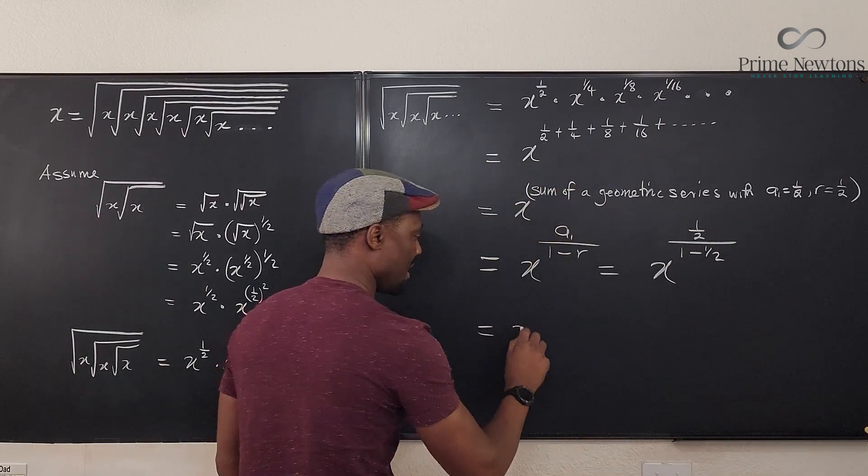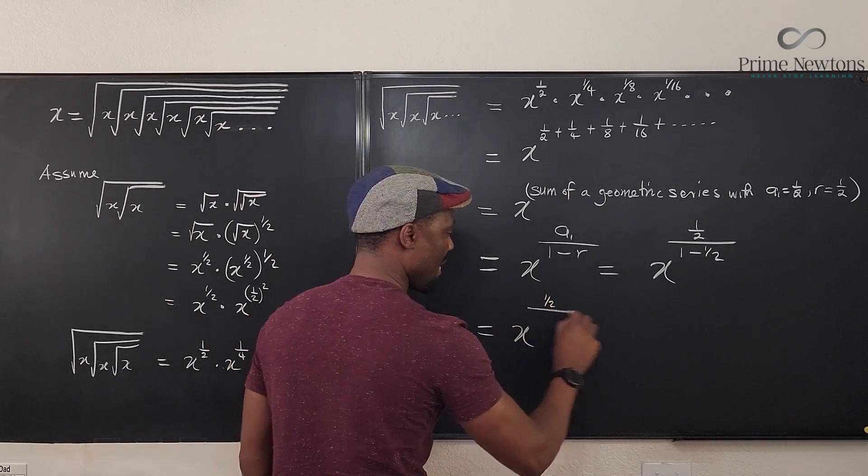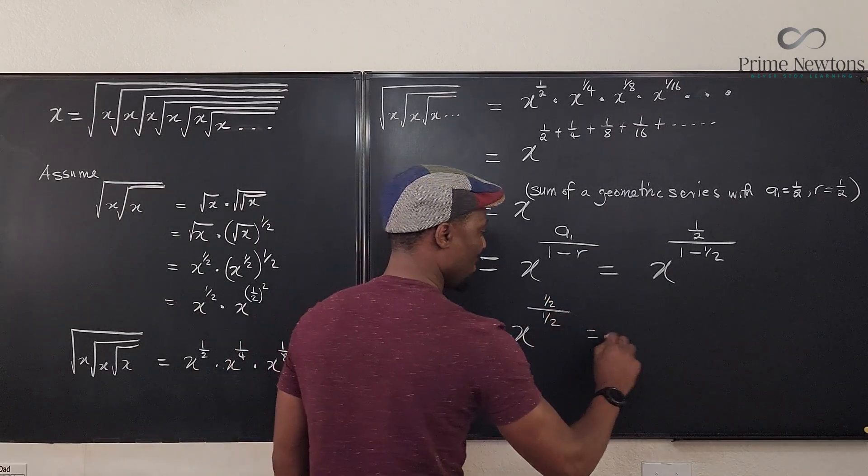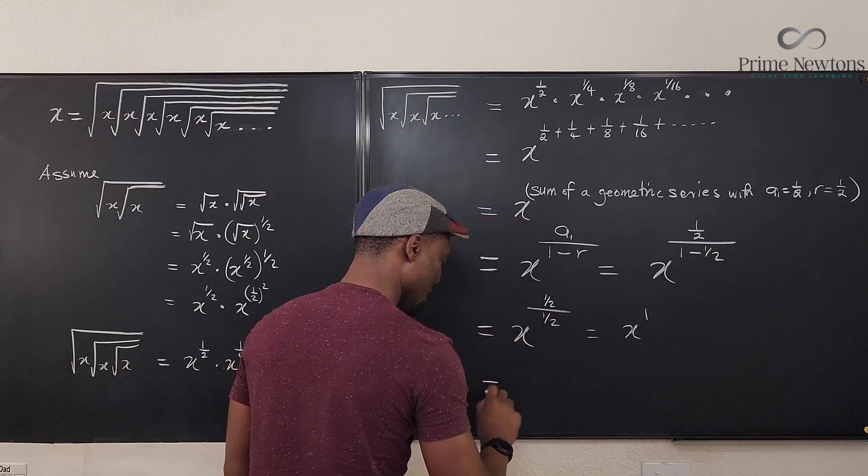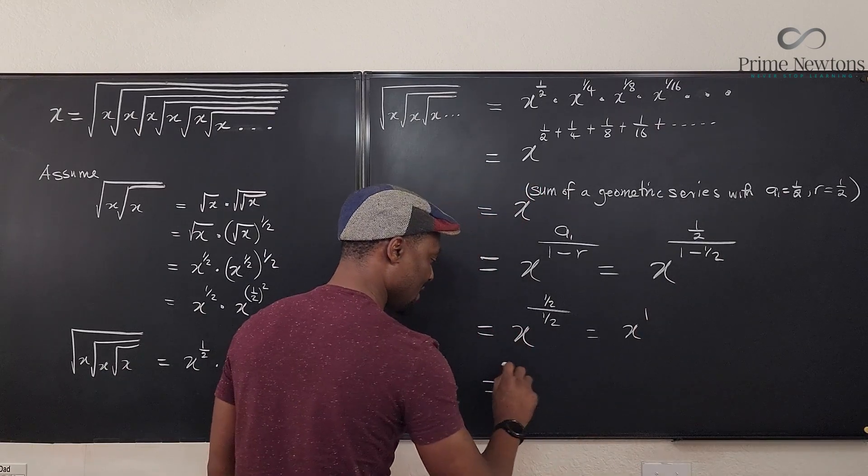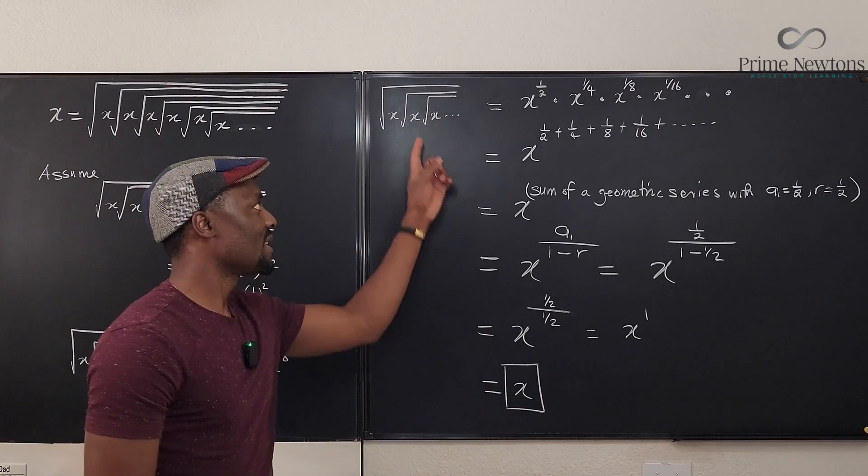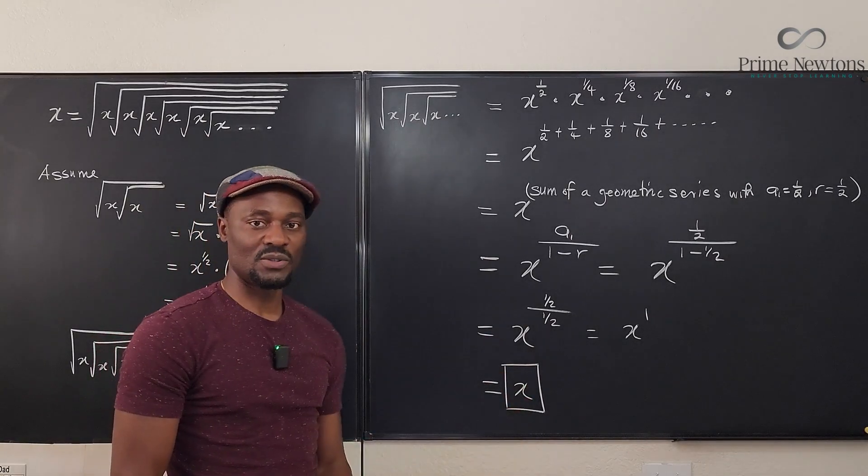Well, clearly that's x raised to power one half over one half, which is x raised to power one, which is equal to x. And that's it. This is equal to x.